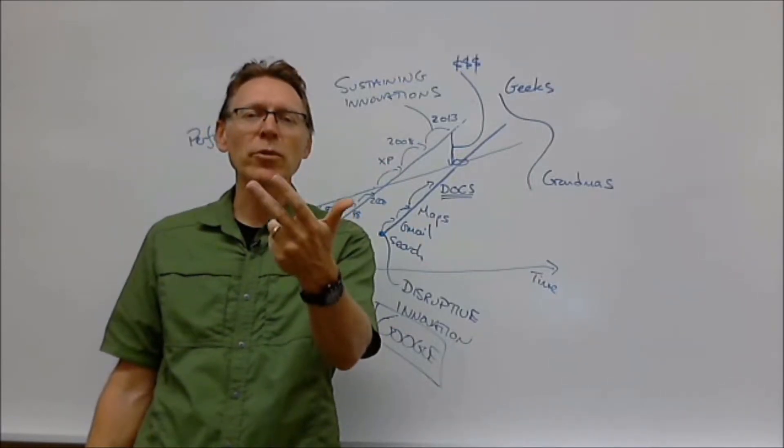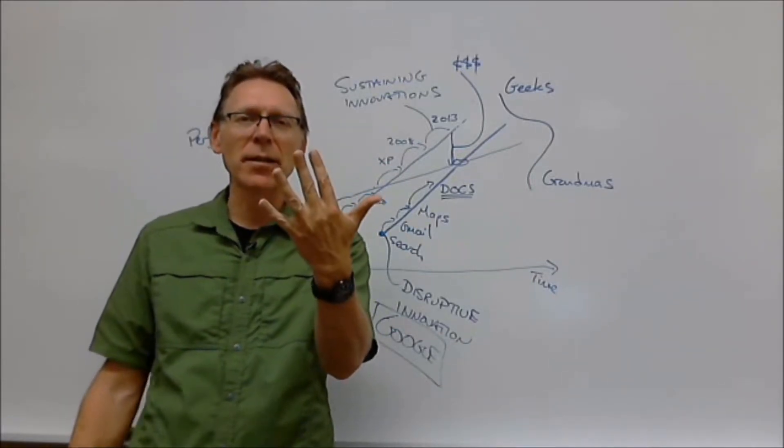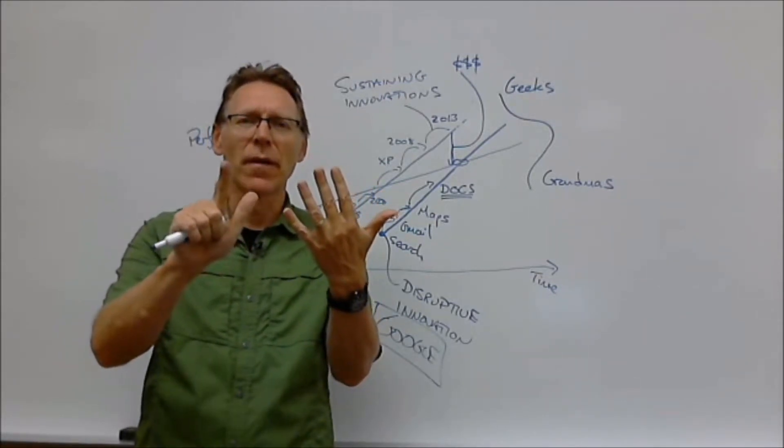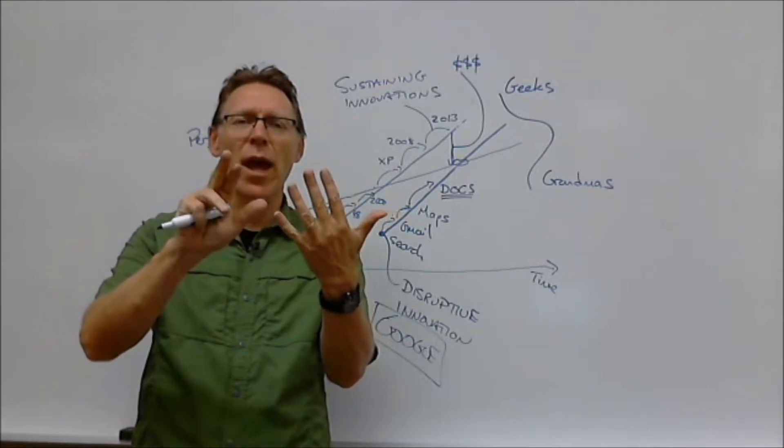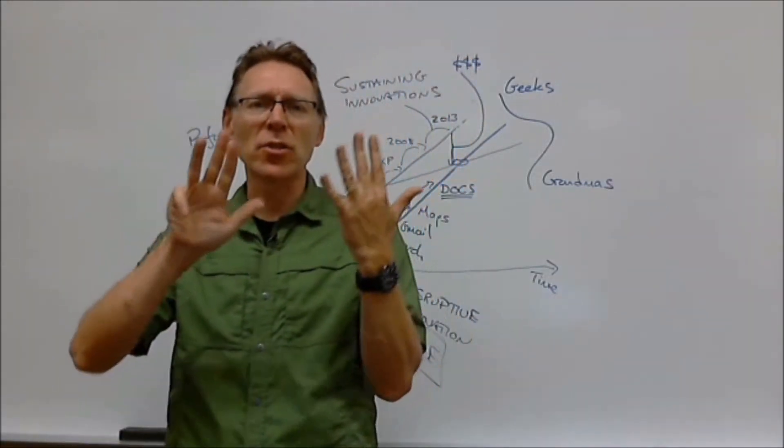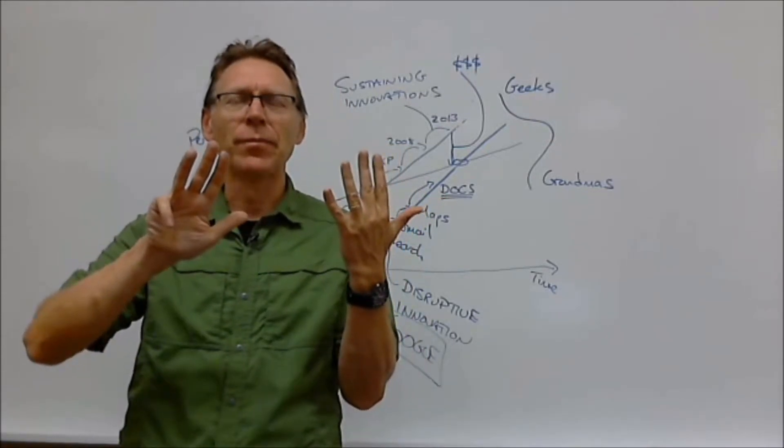So there's bold, underlined, italics. Did we have open and close? We did. So we have save. We have print. We have margins. We have font. Print preview. So now we're up to 10.